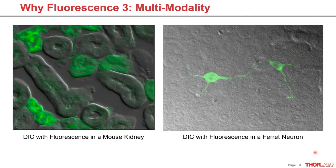The third advantage is that fluorescence adds to your existing imaging setup. We see images of mouse kidney and ferret neurons that are both DIC images superimposed with fluorescence images. We can have structural information from the DIC contrast and on top of that biologically related information — for example, only a subset of cells being labeled by fluorescence.